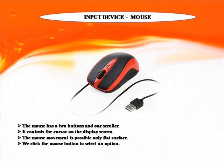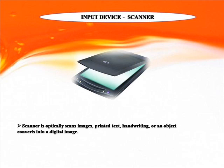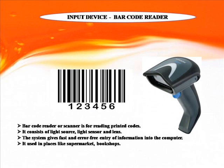Input Device: Scanner. A scanner optically scans images, printed text, handwriting or objects and converts them into a digital image. Barcode reader or scanner is for reading printed codes. It consists of a light source, light sensor and lens. The system gives fast and error-free entry of information into a computer. It is used in places like supermarkets and bookshops.